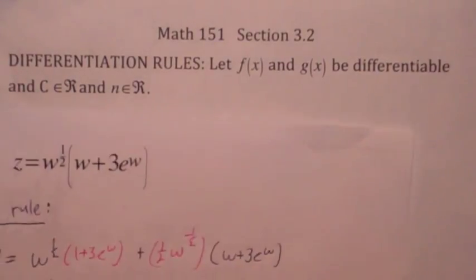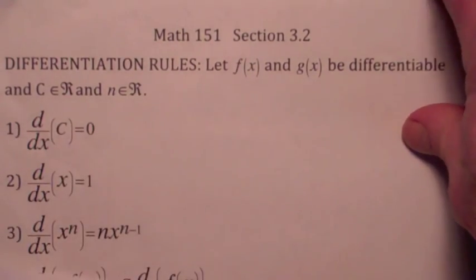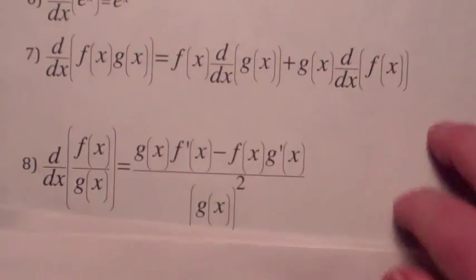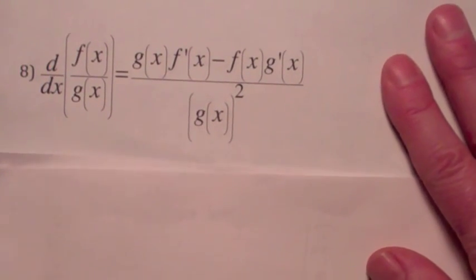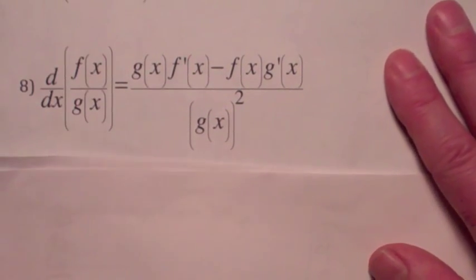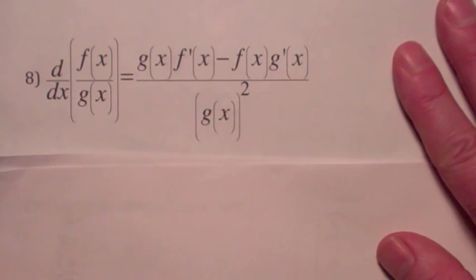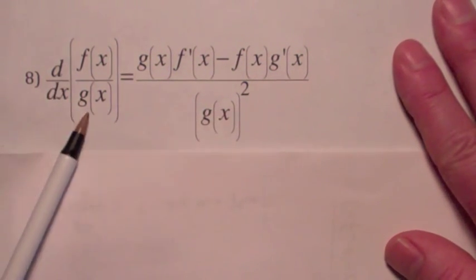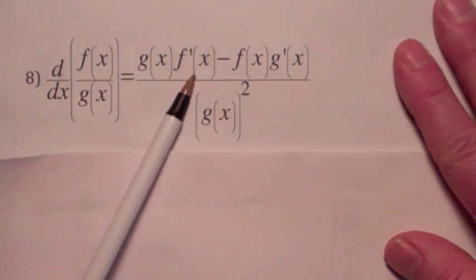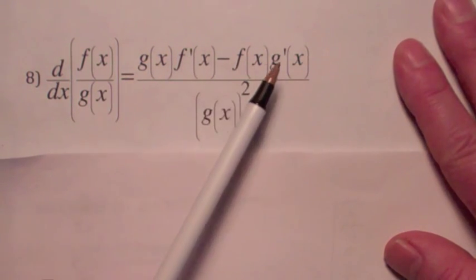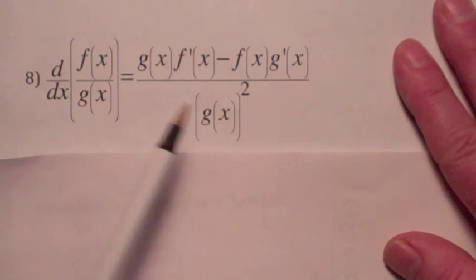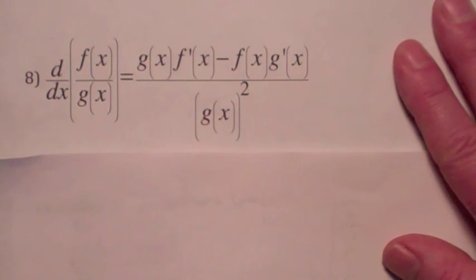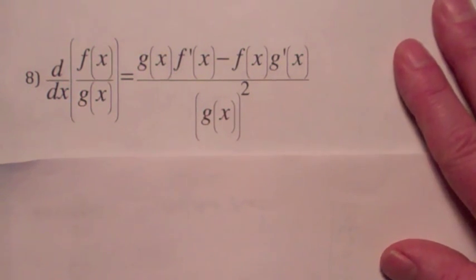Now I'm going to talk about the other differentiation rule in this section: the quotient rule. It talks about how to differentiate a quotient. It's kind of complicated and the order is really important. The derivative of a quotient is the bottom function times the derivative of the top, minus the top function times the derivative of the bottom, all over the square of the bottom function. It always starts with the bottom times the derivative of the top — remember that.